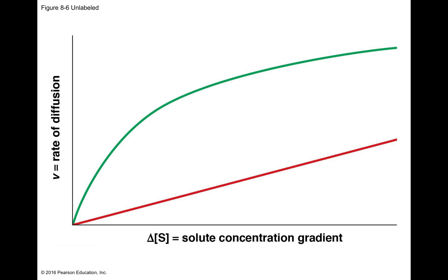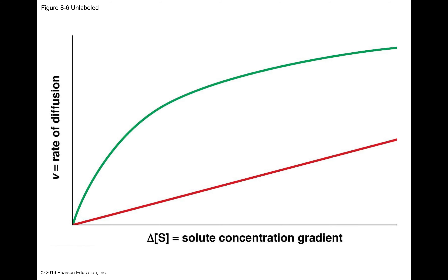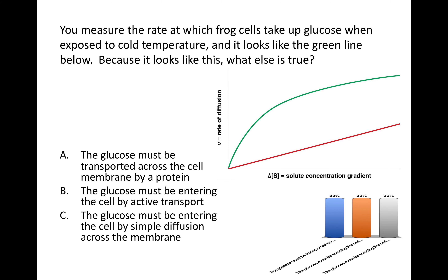Looking at this curve again — you measure the rate at which a frog cell takes up glucose when exposed to cold temperature, and it looks like the green line. Because it looks like this shape, what else is true? Think about the shape of these curves and you should be able to answer this question.